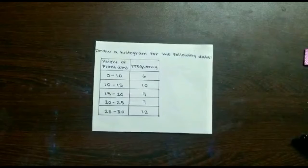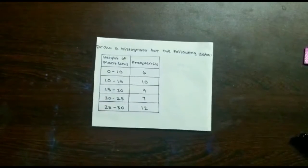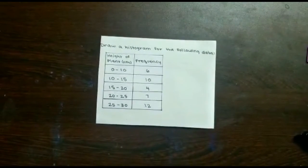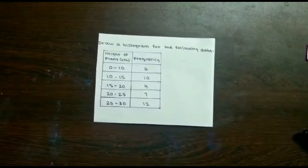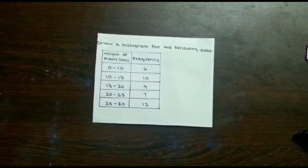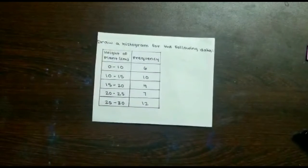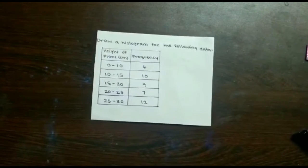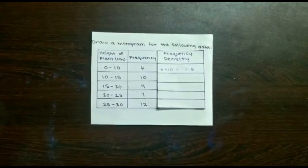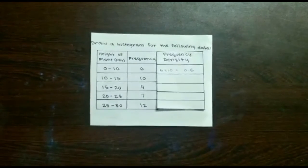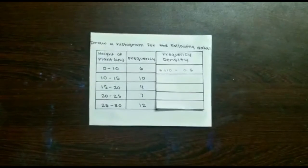Now let's work on constructing a histogram. The question says to draw a histogram for the following data, and we are given a table with groups for the height of the plant and the frequency for each. But when we look at the table, we can see that the class intervals are unequal widths. This means we can't rely on the height of the bars to measure frequency. This is when we bring in frequency density.